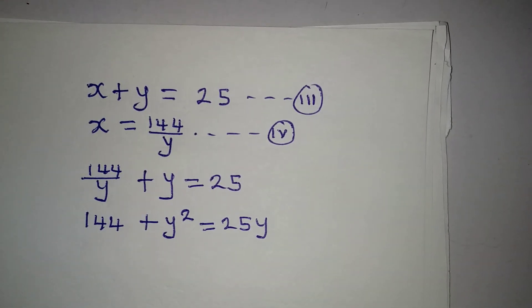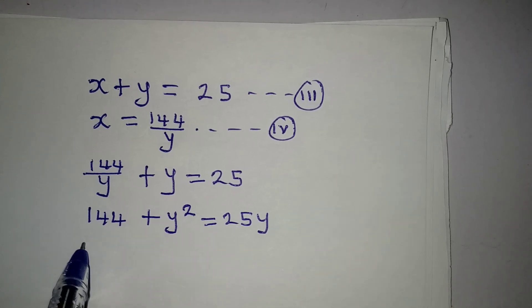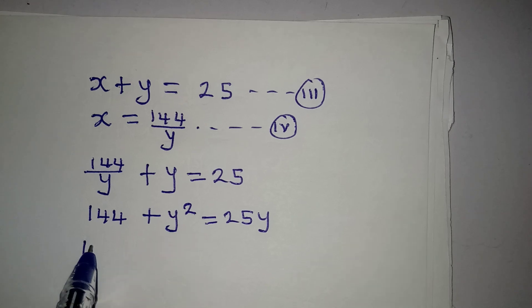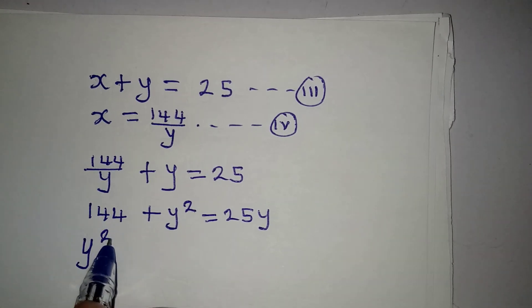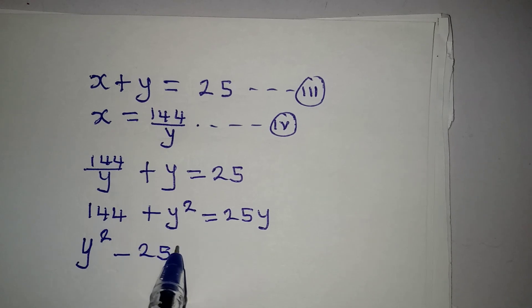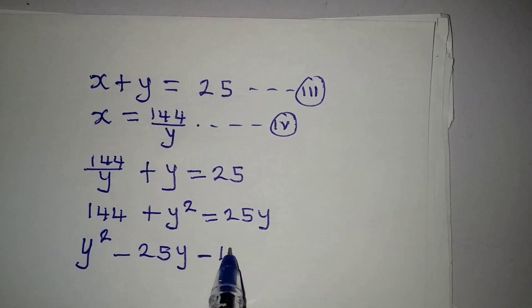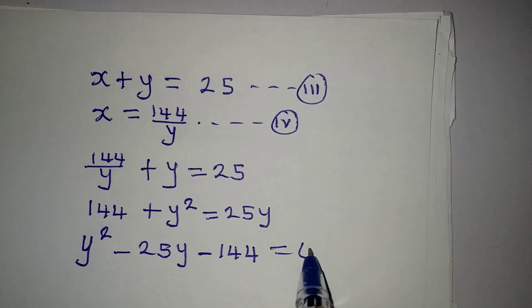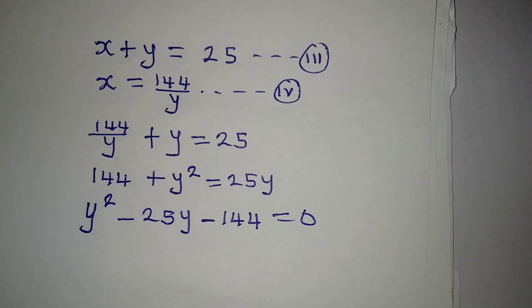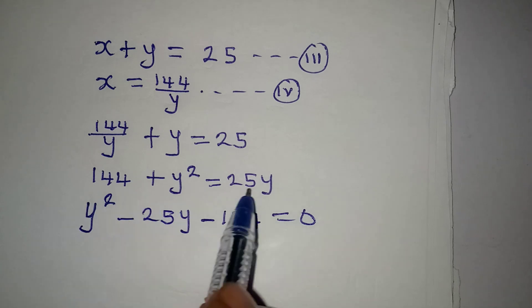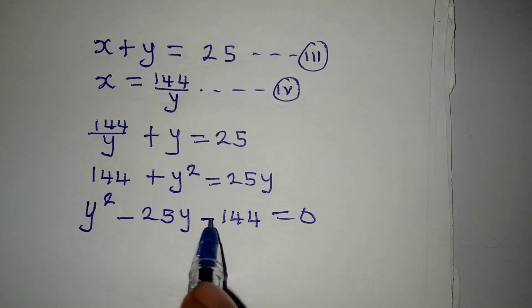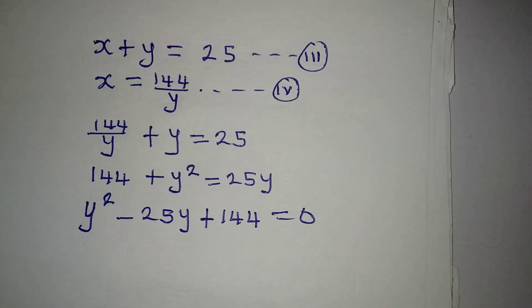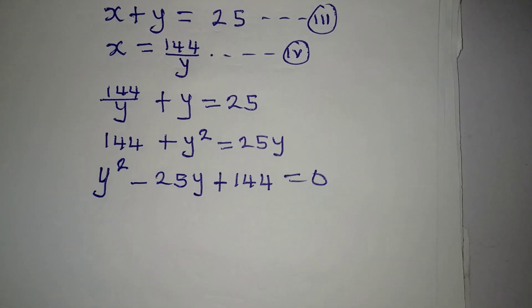Rearranging, we get y squared minus 25y plus 144 equals 0. This is a quadratic equation that we can solve using the quadratic formula.